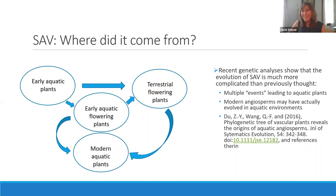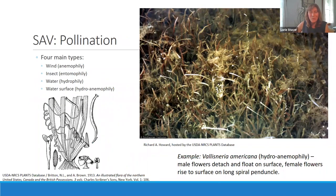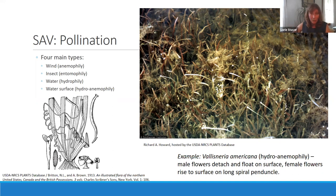These plants are growing in the water, they're flowering plants, and flowering plants have to be pollinated to produce seed and reproduce. On land, most plants are pollinated by wind or by insects. That applies also to water: there are species that are wind-pollinated, where flowers emerge above the surface and wind blows the pollen, or insects land on the flowers and transfer pollen that way.